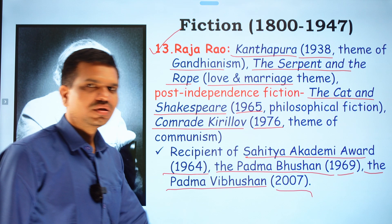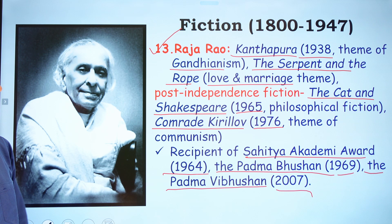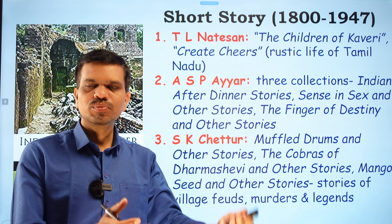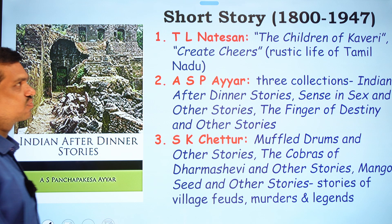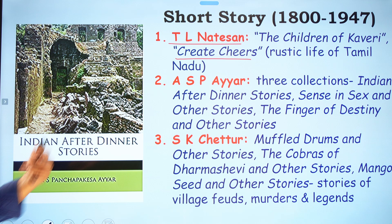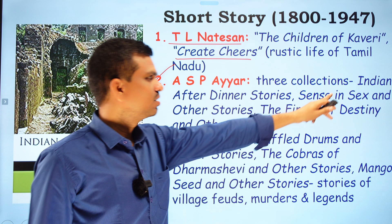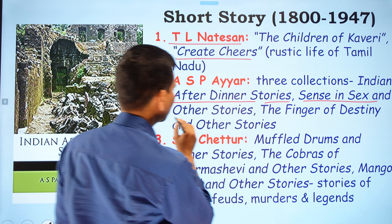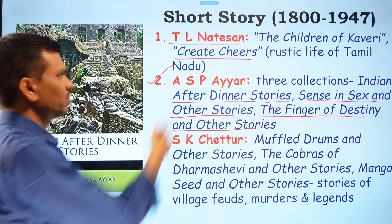Now let's look at the short story in this period. Fiction is divided into the novel and the short story. T.L. Natesan's The Children of Kaveri depicts the rustic life of Tamil Nadu. A.S.P. Iyer has three collections: Indian After-Dinner Stories, Sense, Insects and Other Stories, and The Finger of Destiny and Other Stories.